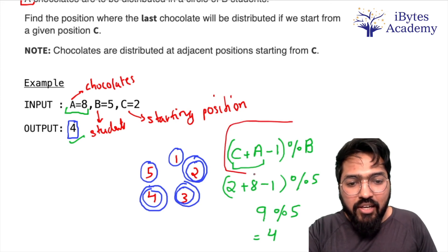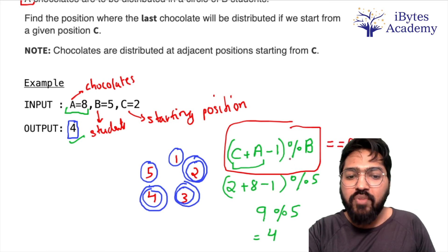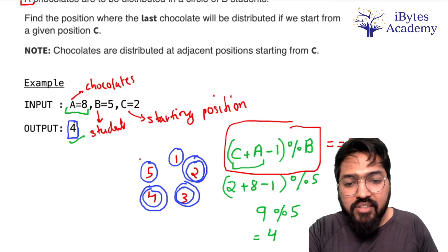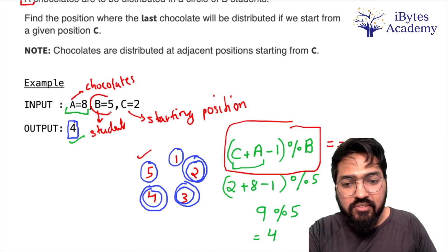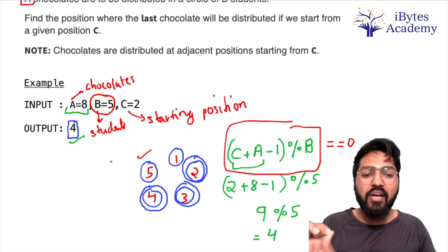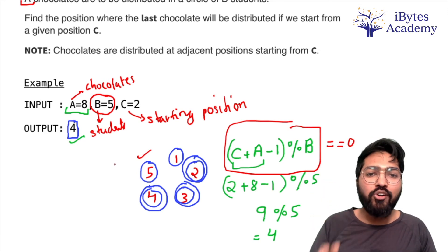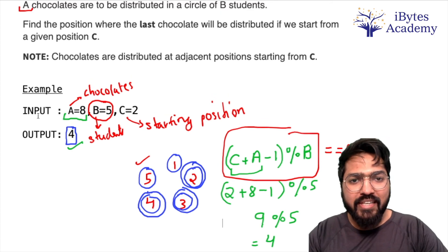Bas ek cheez ka dhyan rakhna padega ki agar yeh value 0 nikal ke aati hai, in that case our answer is going to be last person, that is B equals 5. Jo B ki value hai wo hamara answer hoga, jo last person hai usko last chocolate mili hogi. Yeh humko jaan rakhna hoga. To chalo ab code dekh lete hain.